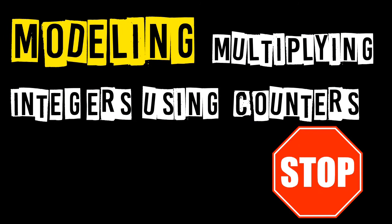You are now on Part 2 — this is about how to model multiplying integers using counters. I've put a stop sign here because this is where you're going to stop. For this part, I want you to watch the video with the counters first without writing any notes or drawing anything on your worksheet. Watch through it to get an idea of what's happening, then pause, rewind back to this stop sign, and take out your pencil to model multiplying integers.